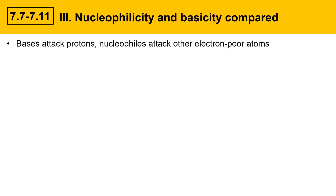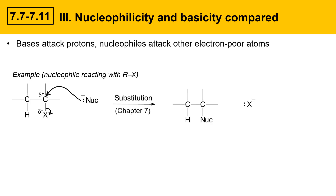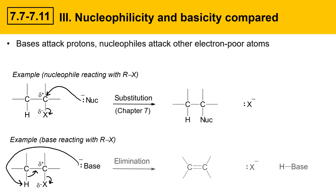This slide compares nucleophilicity and basicity. Bases attack protons; nucleophiles attack other electron-poor atoms like carbon. In a substitution reaction, the nucleophile attacks the carbon and the leaving group leaves — that's the focus of chapter 7. Bases react with protons; a base can pull off the proton next to the leaving group, giving a new carbon-carbon double bond and an alkene. That's called an elimination reaction and is the subject of chapter 8.